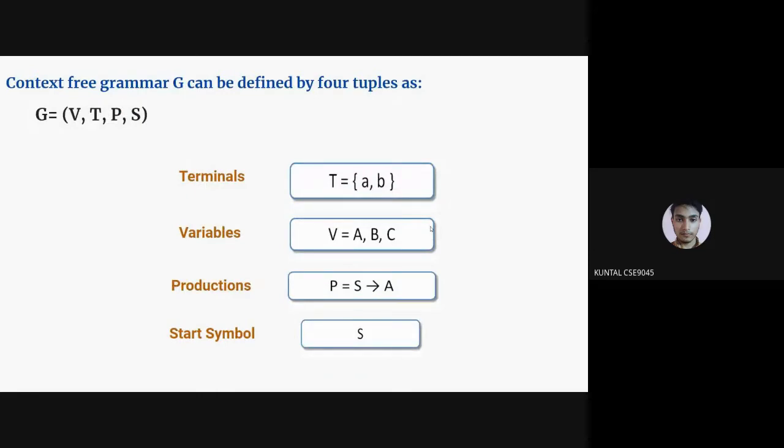A context-free grammar G is defined by four tuples: G = (V, T, P, S). G is the grammar consisting of a set of production rules used to generate strings of a language. T is the finite set of terminal symbols, denoted by lowercase letters. V is the finite set of non-terminal symbols, denoted by capital letters. P is the set of production rules used for replacing non-terminal symbols on the left side with terminals or non-terminals on the right side. S is the start symbol used to derive strings.